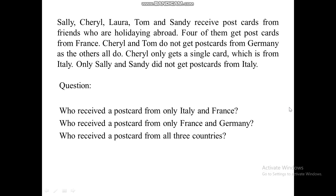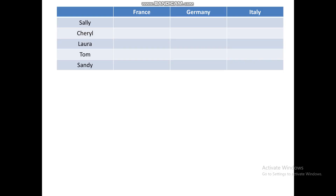So what you're going to do if you'll be facing this kind of situation — these situational problems — you are going to make a table. Something like this. I put all of their names, and then the countries from which the postcards are coming. So we have Sally, Cheryl, Laura, Tom, and Sandy. And for the countries, it's France, Germany, and Italy.